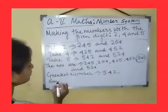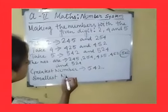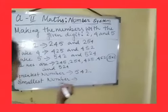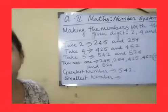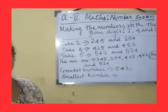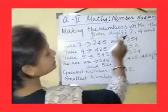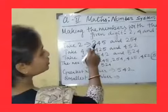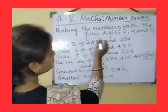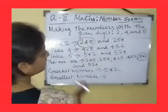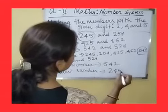Likewise, what will be the smallest number? To form the smallest number, we arrange the digits in ascending order — smallest to greatest. The smallest digit is 2, then 4, then 5. So the smallest number is 245.